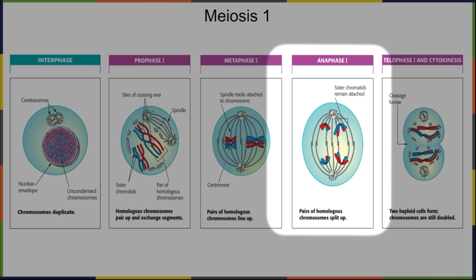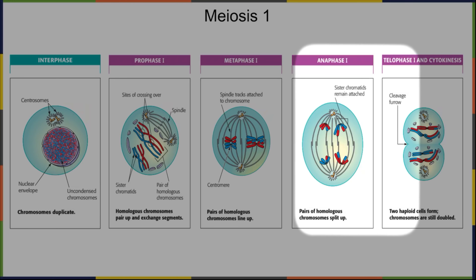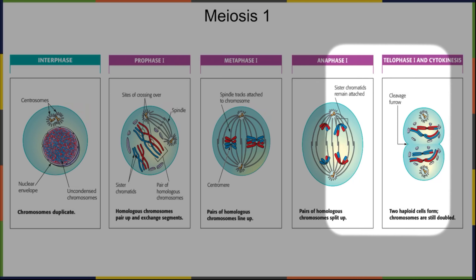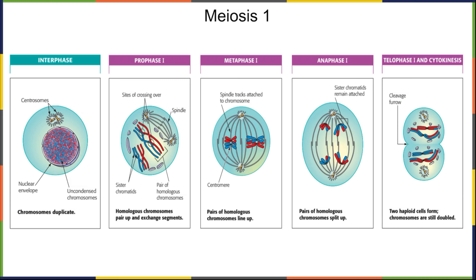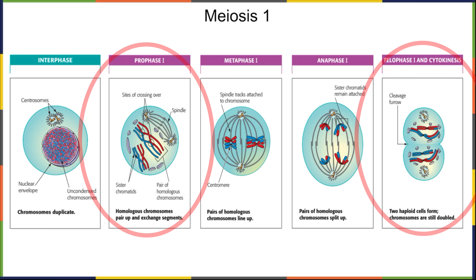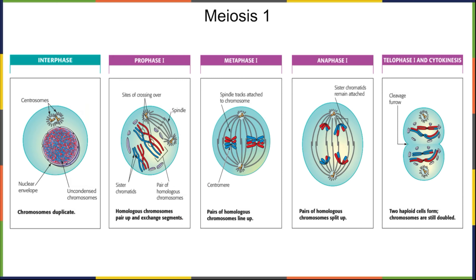The next stage is telophase one and cytokinesis. In this stage, two haploid cells are formed. The chromosomes are still doubled, a cleavage furrow develops, and the two cells separate through cytokinesis. At the end of meiosis one, we're left with two cells that are haploid in the sense that they have only one set of genetic information, but those sets are still doubled. Comparing this to prophase one, each new cell has either a red set or a blue set of chromosomes, whereas the original cell had both.